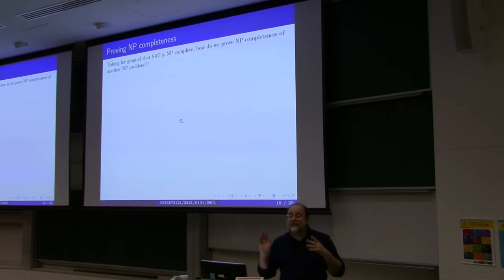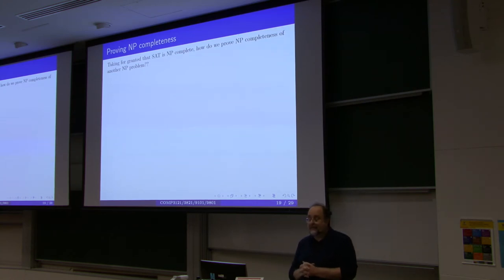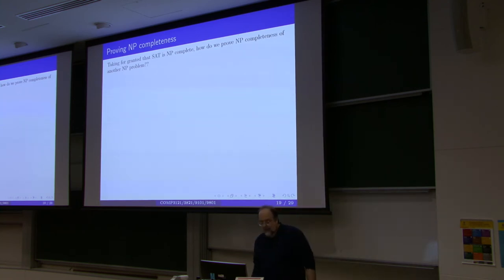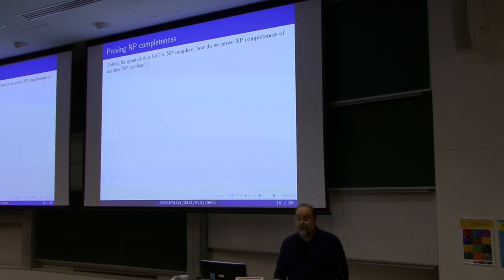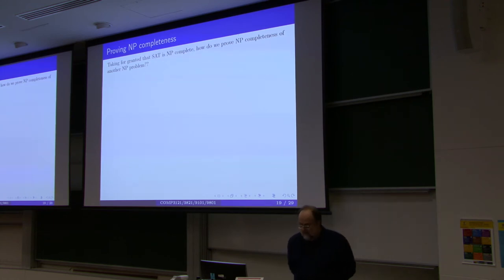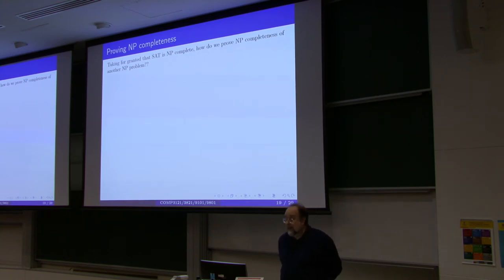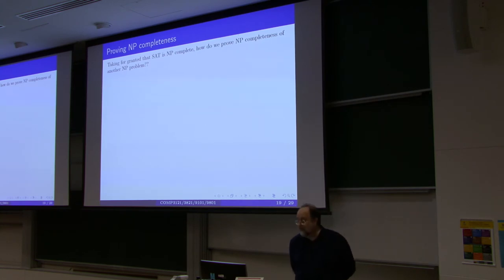The first example of an NP-complete problem was Cook's theorem, which says that every NP problem is reducible to SAT. The proof is not terribly complicated — I am going to show it tomorrow in the extended class and you can watch it on YouTube. It's not terribly hard, but it's a very clever construction.